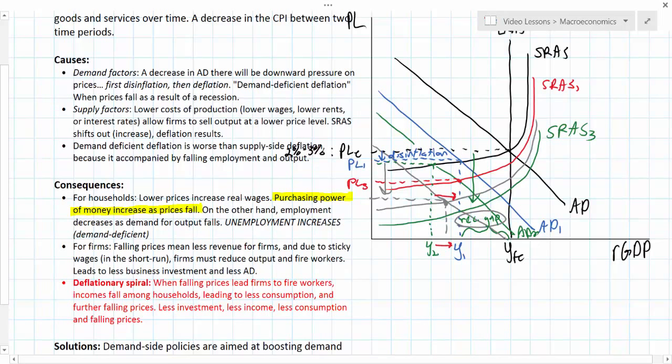Therefore, we end up with what we call deflationary spirals. As less consumption leads to falling prices, less investment, lower incomes, and further decreases in consumption and further falling prices.